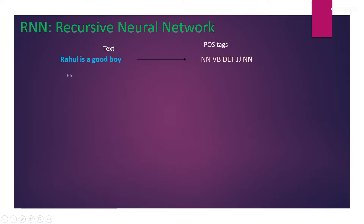We have a sentence: 'Rahul is a culprit.' Our task is to create POS tags for this sentence. As you can see, Rahul is a noun, 'is' is a verb, 'a' is a determiner, 'good' is an adjective, and 'boy' is a noun. We know all these POS tags because we understand English grammar, and when we read the sentence we understand its meaning and can create the tags. Our task is to design a model which will generate these tags for us.